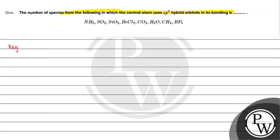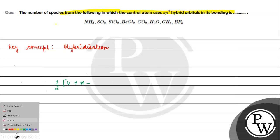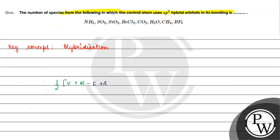The key concept for this question is hybridization. We use the hybridization formula based on the steric number concept. The formula is: half of V (valence electrons of the central atom), plus M (monovalent species attached to the central atom), minus the cationic charge if any, and plus the anionic charge if any.